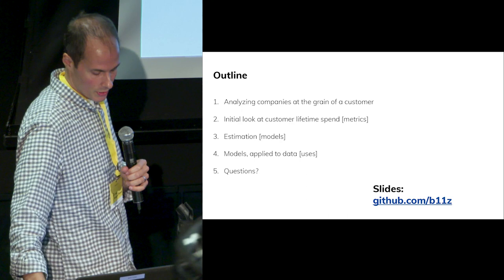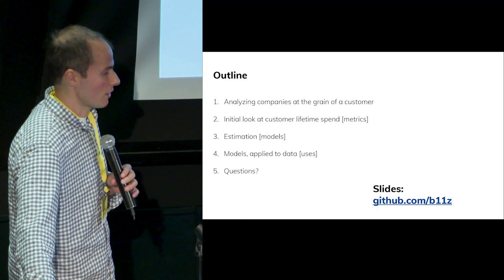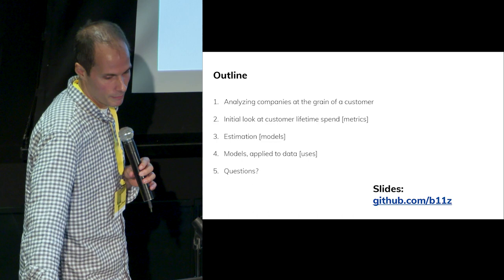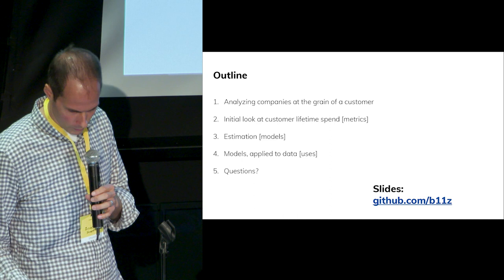I'll talk a little bit about Second Measure and what we do there in a bit, but I'm going to jump right in. This talk is in the area of business analysis. It's about what happens when you stop thinking about business results as a flow of dollars and start thinking about them as flows of dollars attached to customers, analyzing those customers directly — and some non-obvious things that happen when you analyze your data that way.